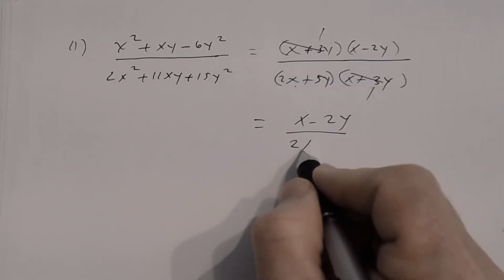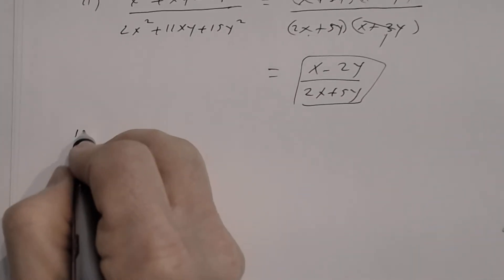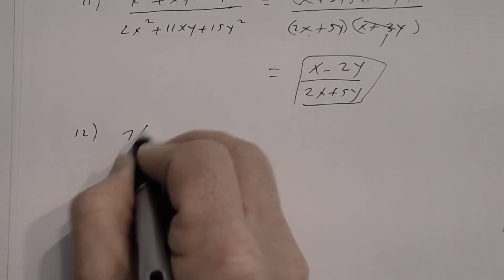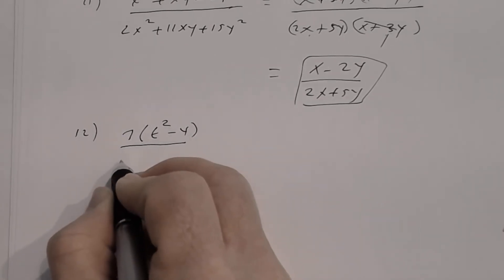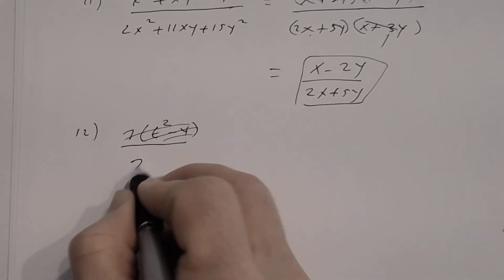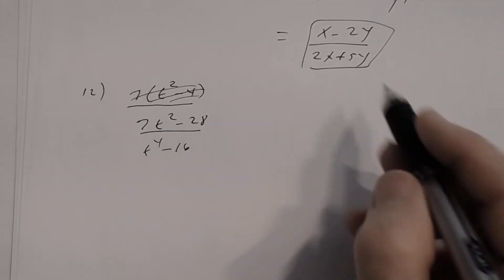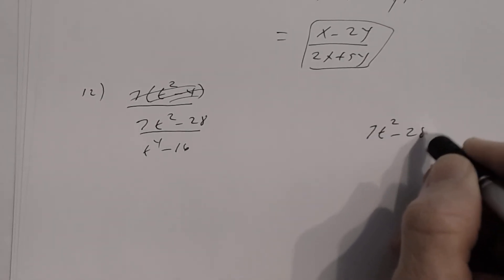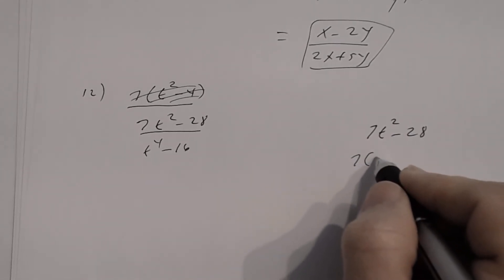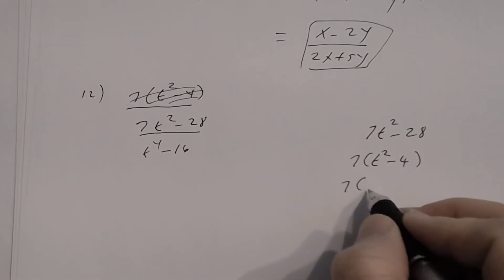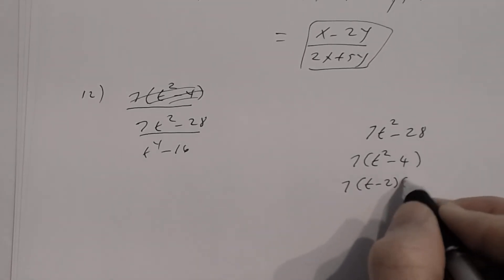Number twelve: (7t² − 28) divided by (t⁴ − 16). Factor the numerator: factor out 7 to get 7(t² − 4), then factor the difference of two squares to get 7(t − 2)(t + 2). The denominator t⁴ − 16 is also a difference of two squares: (t² − 4)(t² + 4).